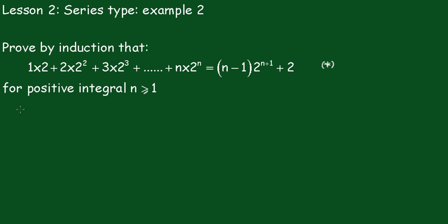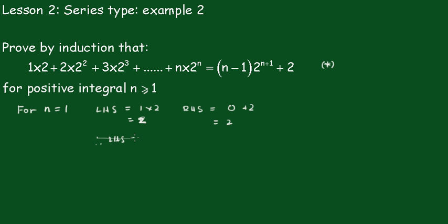Now again we'll start with n equals 1. For n equals 1, the left hand side is equal to 1 times 2, which equals 2. The right hand side becomes 0 plus 2, which also equals 2. Therefore the left hand side is equal to the right hand side, and the statement is true for n equals 1.